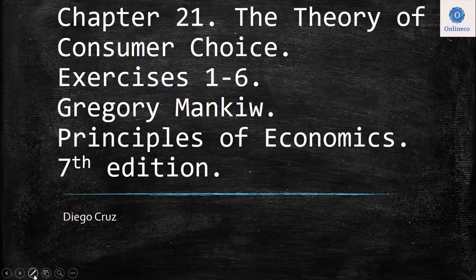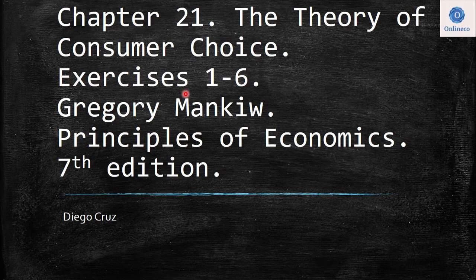Hi everyone, welcome to this video. We are going to develop the exercises 1 to 6 of Chapter 21, The Theory of Consumer Choice. Remember, this is the book of Gregory Mankiw, Principles of Economics.